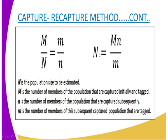Capital N represents the total population. To calculate it: capital N equals capital M multiplied by small n, divided by small m — where small m is the number of members of the subsequent captured population that are tagged. Having done that, you will get an estimate of the total population in the area that you are studying.